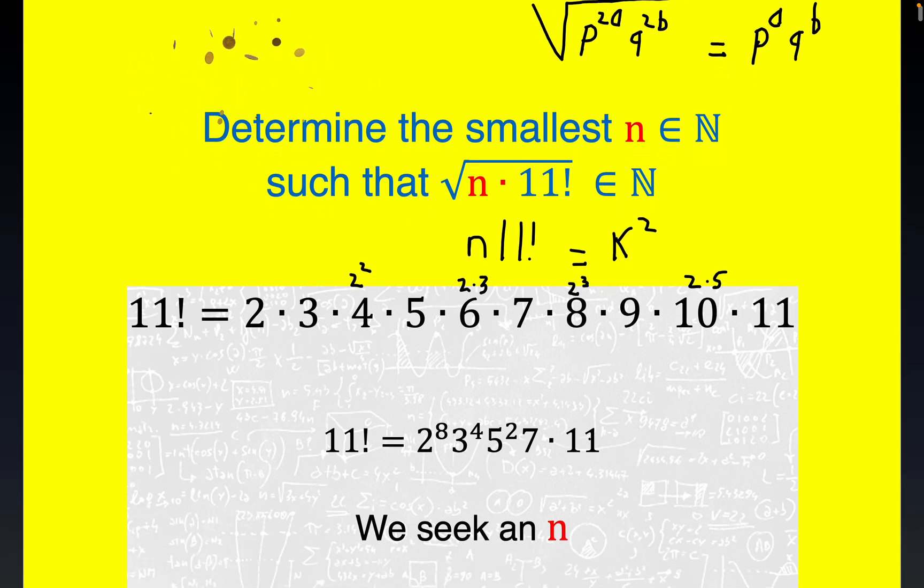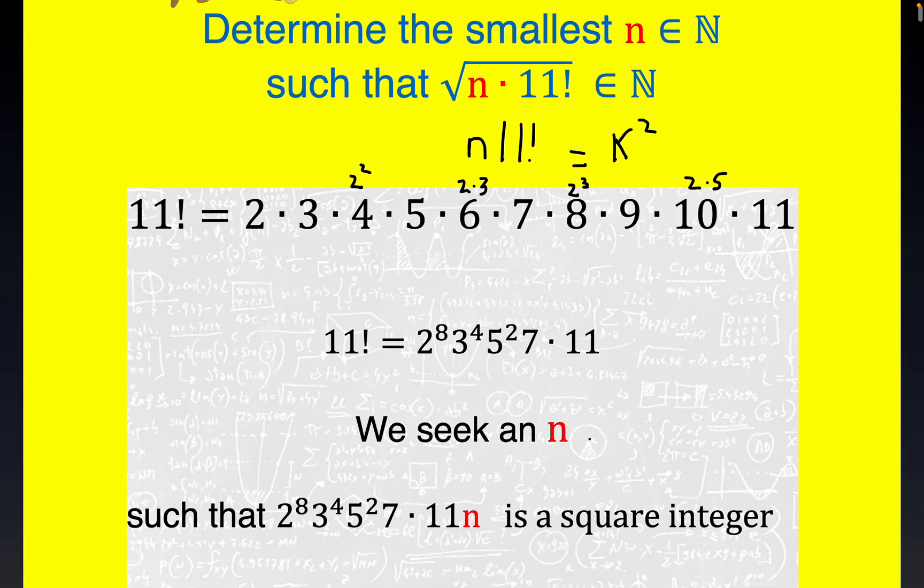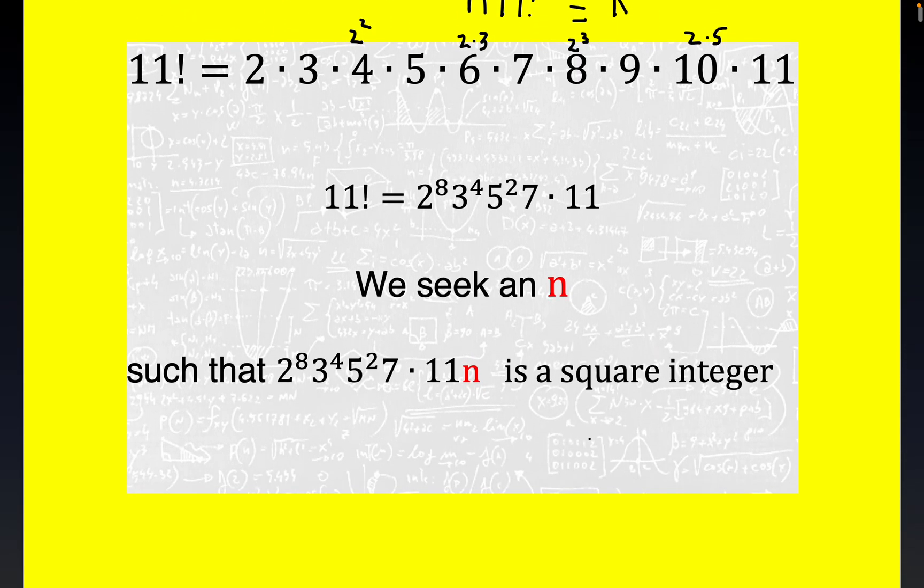And so we're looking for an n. We got the answer working real fast. It's very obvious here that n would have to be equal to seven times eleven. It's good to just write it that way. Of course, that's equal to 77.